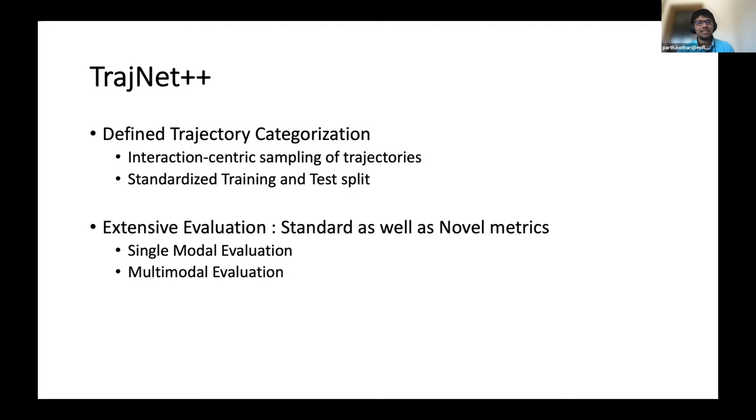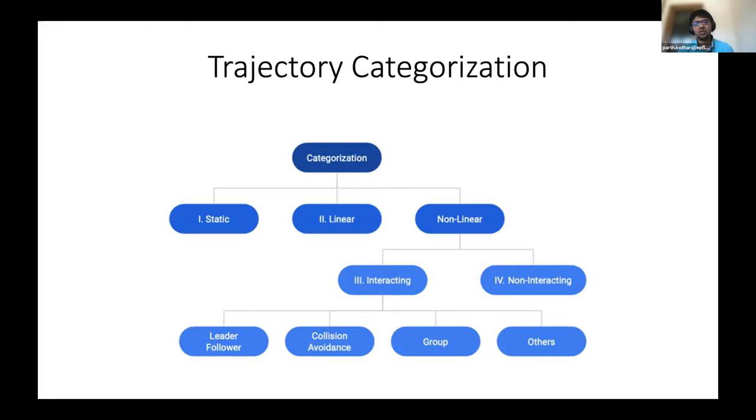And second, we present an extensive evaluation which evaluates not only methods which predict just one future, but also methods which can predict multiple futures. With respect to trajectory categorization, this is our overall categorization framework where given a trajectory, we first identify is it static, then we identify is it linear. By linear we mean, can the trajectory be predicted by a simple Kalman filter. And within the nonlinear categories, we have the interacting categories where in these samples the trajectories undergo various social interactions known in literature like leader-follower, collision avoidance or group behavior.